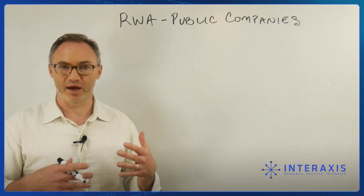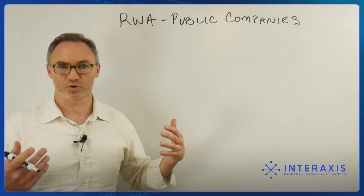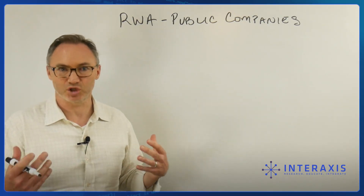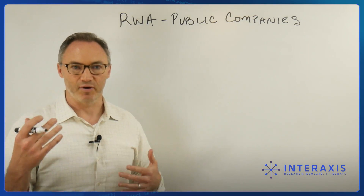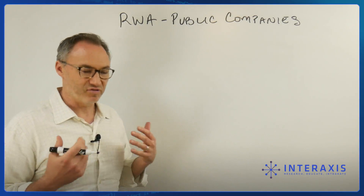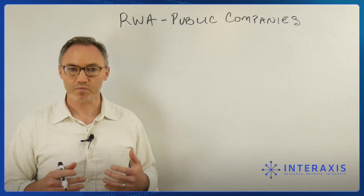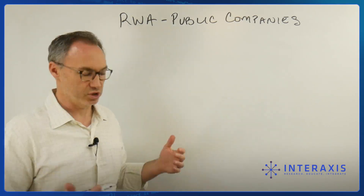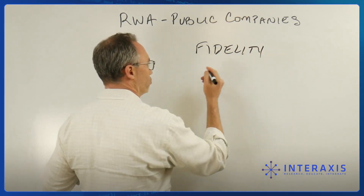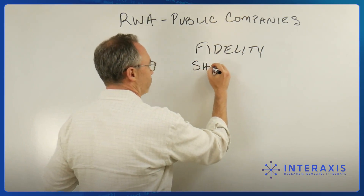To do that, we need to move back a little bit and see how we trade, exchange, or hold shares of public companies right now — shares of companies like Apple or Google. Right now, if I have an account with a custodian like Fidelity or Schwab, I have what's called beneficial ownership, meaning Fidelity actually has the certificates — they actually have the shares.